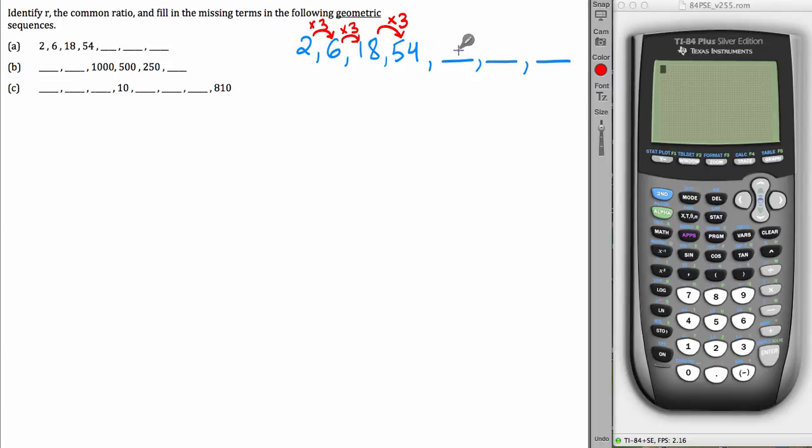Now, if you continue the pattern, you can fill in the rest of the numbers, so let's do that. 54 times 3, 162. 162 times 3, 486. And finally, 486 times 3, 1458.